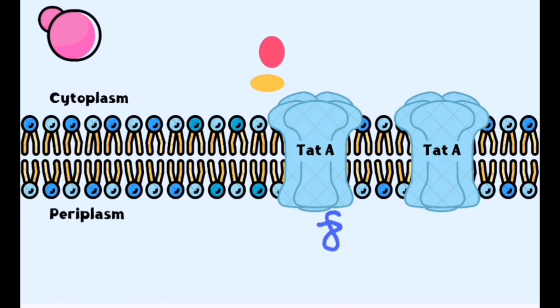After successful translocation, TAT-B and TAT-C dissociate, allowing TAT-A to resume its role. The signal peptide is cleaved, releasing the mature protein into the periplasmic space, ready for its cellular function.